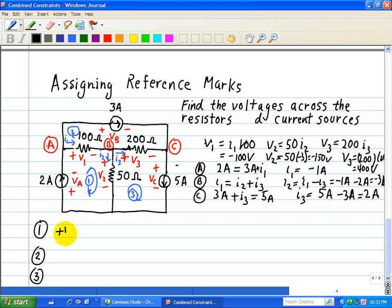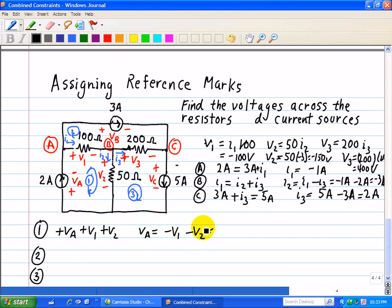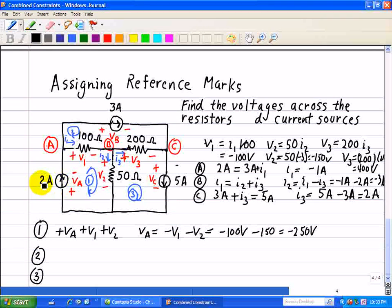That would be plus VA plus V1 plus V2, and we have VA is equal to minus V1 minus V2. But we know what that is: minus 100 volts for V1 and minus 150 volts for V2. So this is minus 250 volts across this 2 amp current source.